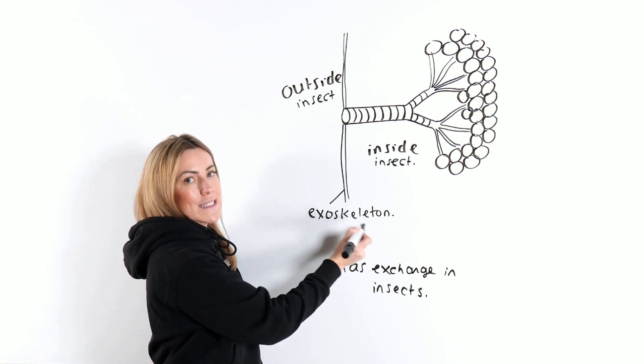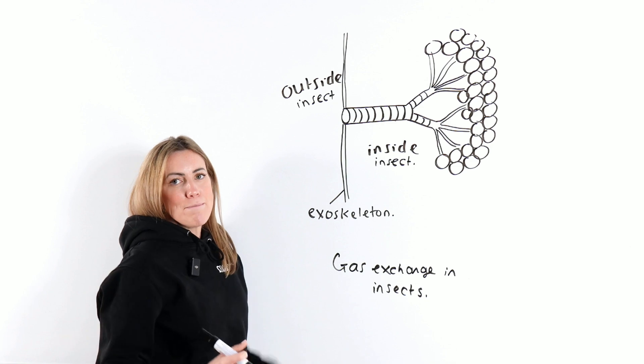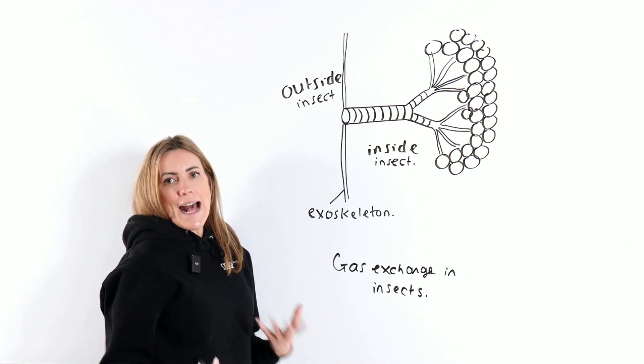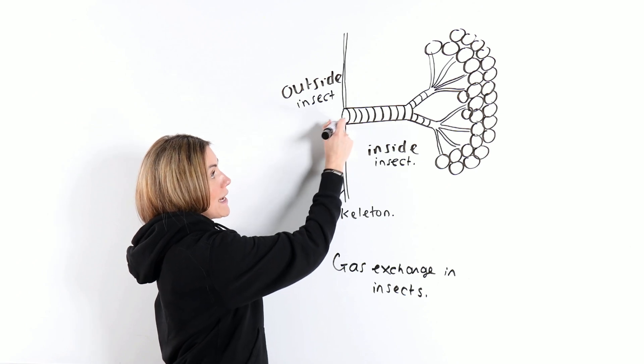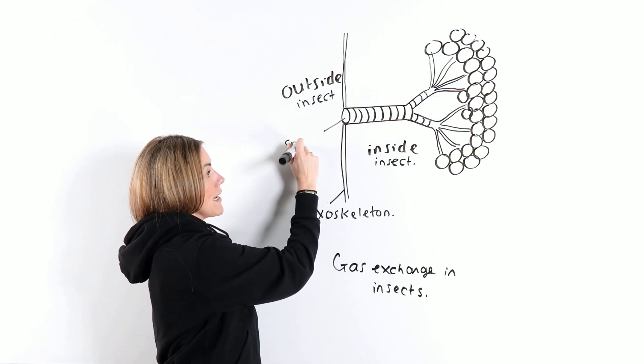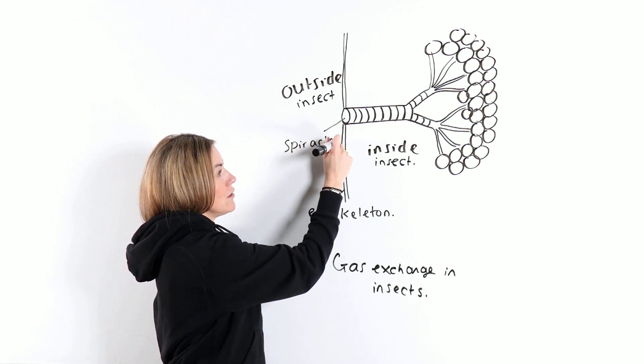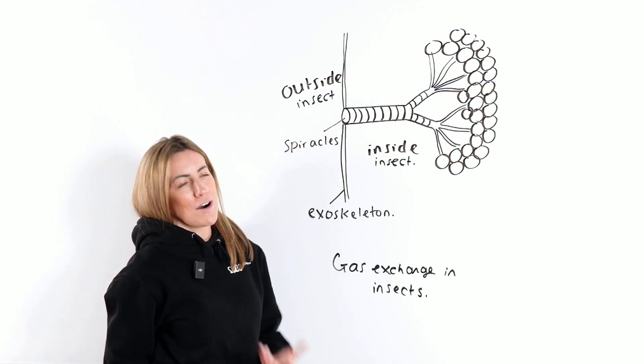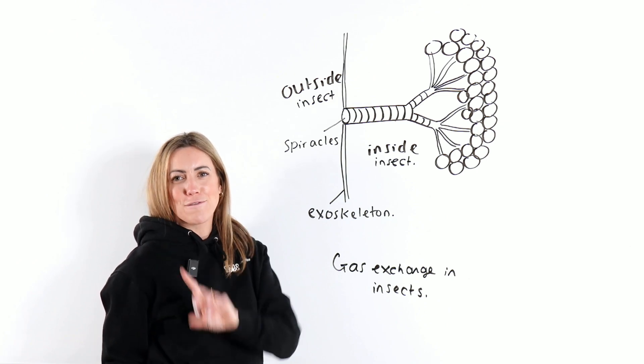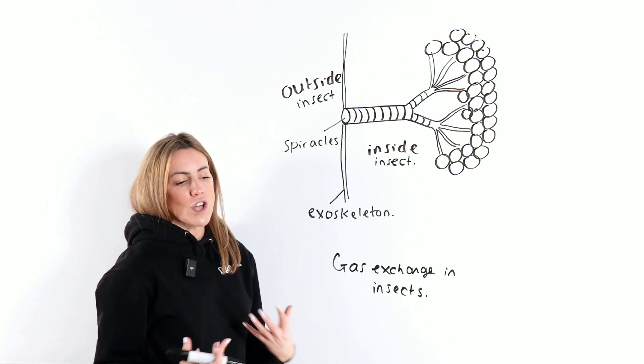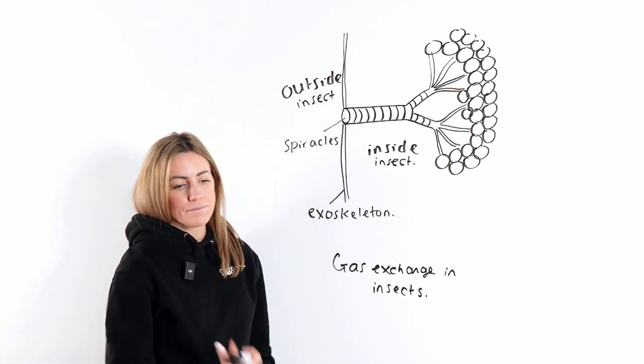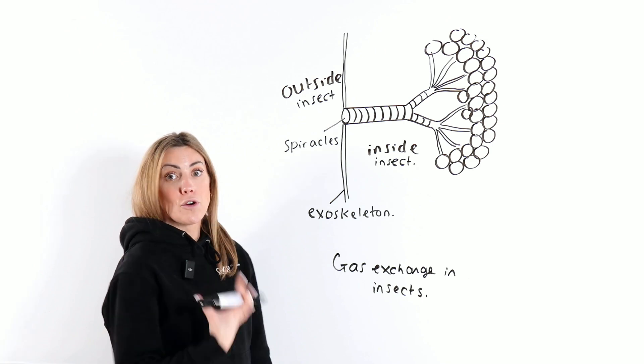Here we've got the exoskeleton, which is an impermeable layer that helps reduce water loss. But in that exoskeleton, there are openings and these openings are called spiracles. They're a little bit like stomata in a leaf, but don't confuse the terms. Those openings are called spiracles and they're found on the insect's abdomen and thorax as well.